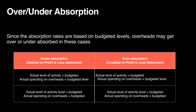You can also have under absorption when the firm made as many units as estimated, but actual spending on overheads was higher. For example, if you estimated maintenance cost at $15,000 but it actually ended up being $20,000, that $5,000 difference is a loss because the firm did not recover the full amount. This reduces the profit the firm actually made. Under absorption occurs when the firm made fewer units or the overheads were higher than estimated.